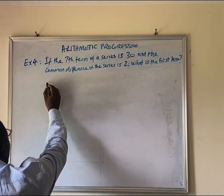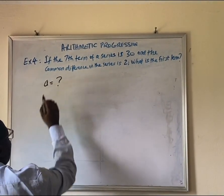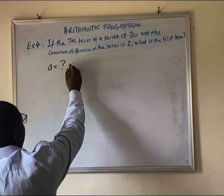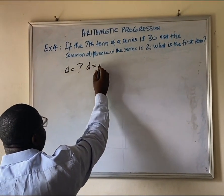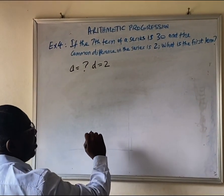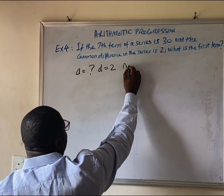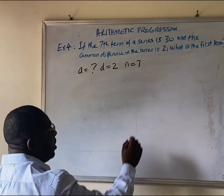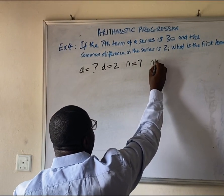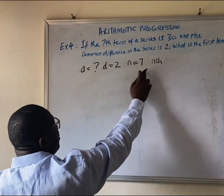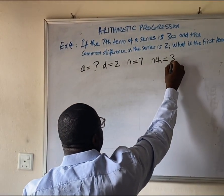From this question, a is unknown. And we are given that the common difference is 2. Now, n is 7, being the 7th term. And we are told that the nth term, we are looking for the 7th term, is 30.